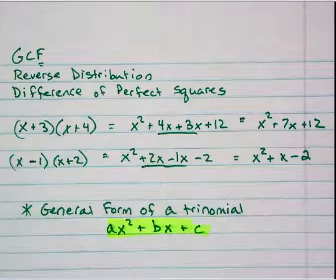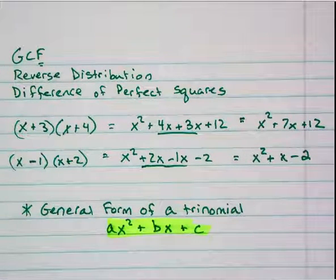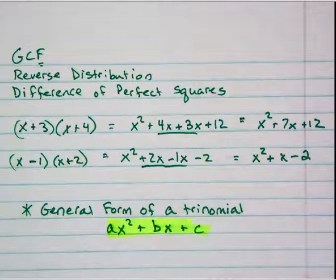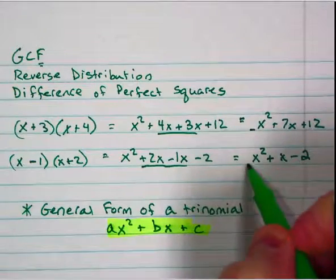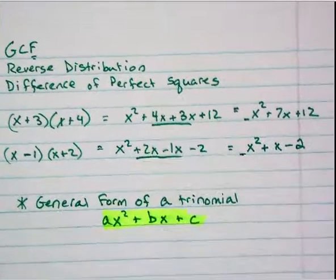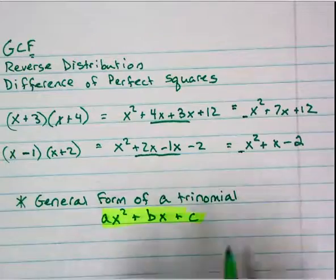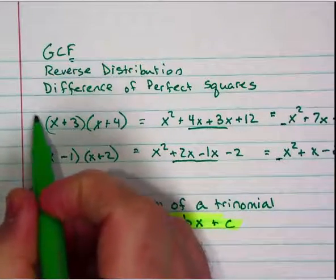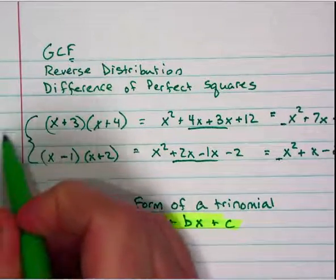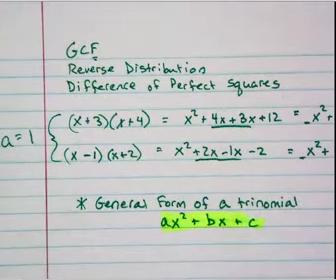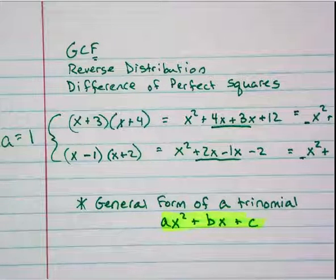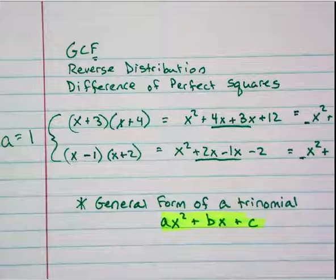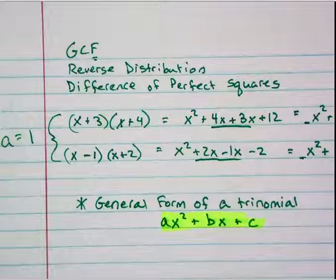We have the general form of a quadratic or trinomial, which is ax squared plus bx plus c. The reason I bring this up is that in the two examples I already did, the number out front of the finalized trinomial — since I don't see it — is actually a 1. In both cases, a ended up being equal to 1. And because a equals 1, when we try to factor, that's the reverse distribution.